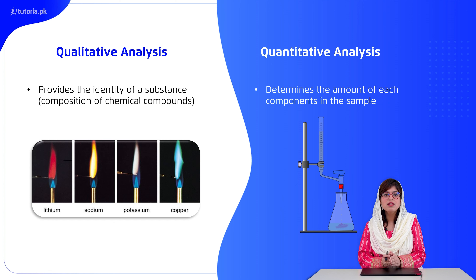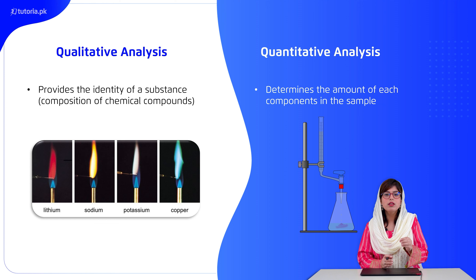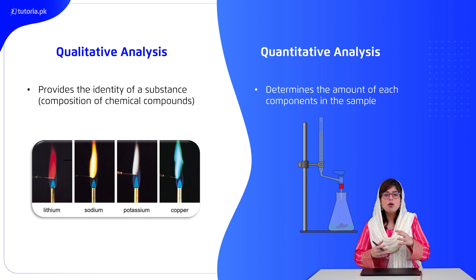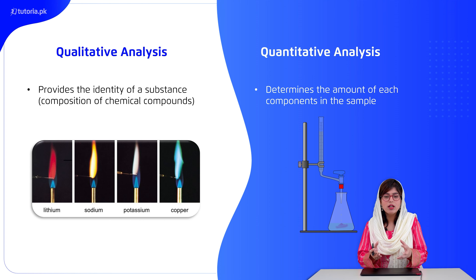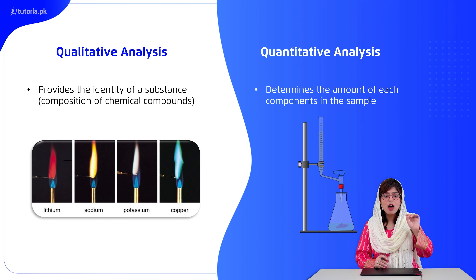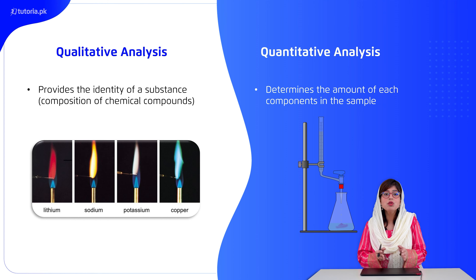There are two types of analysis in analytical chemistry. The first is qualitative analysis — we want to see if a particular element is present in our organic compound or chemical compound. Qualitative analysis provides the identity of a substance, that is, the composition of what is in the chemical compound.